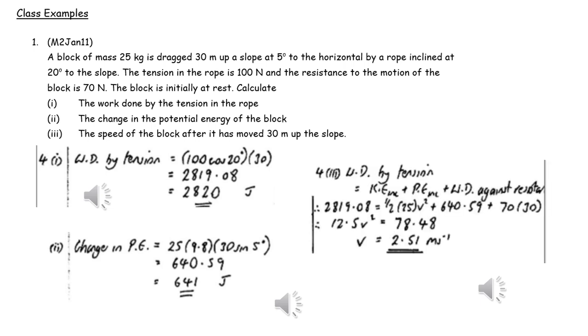In part c, we need to use energy considerations. So the work done by the tension is equal to the increase in kinetic energy plus the increase in potential energy plus the work done against resistance.